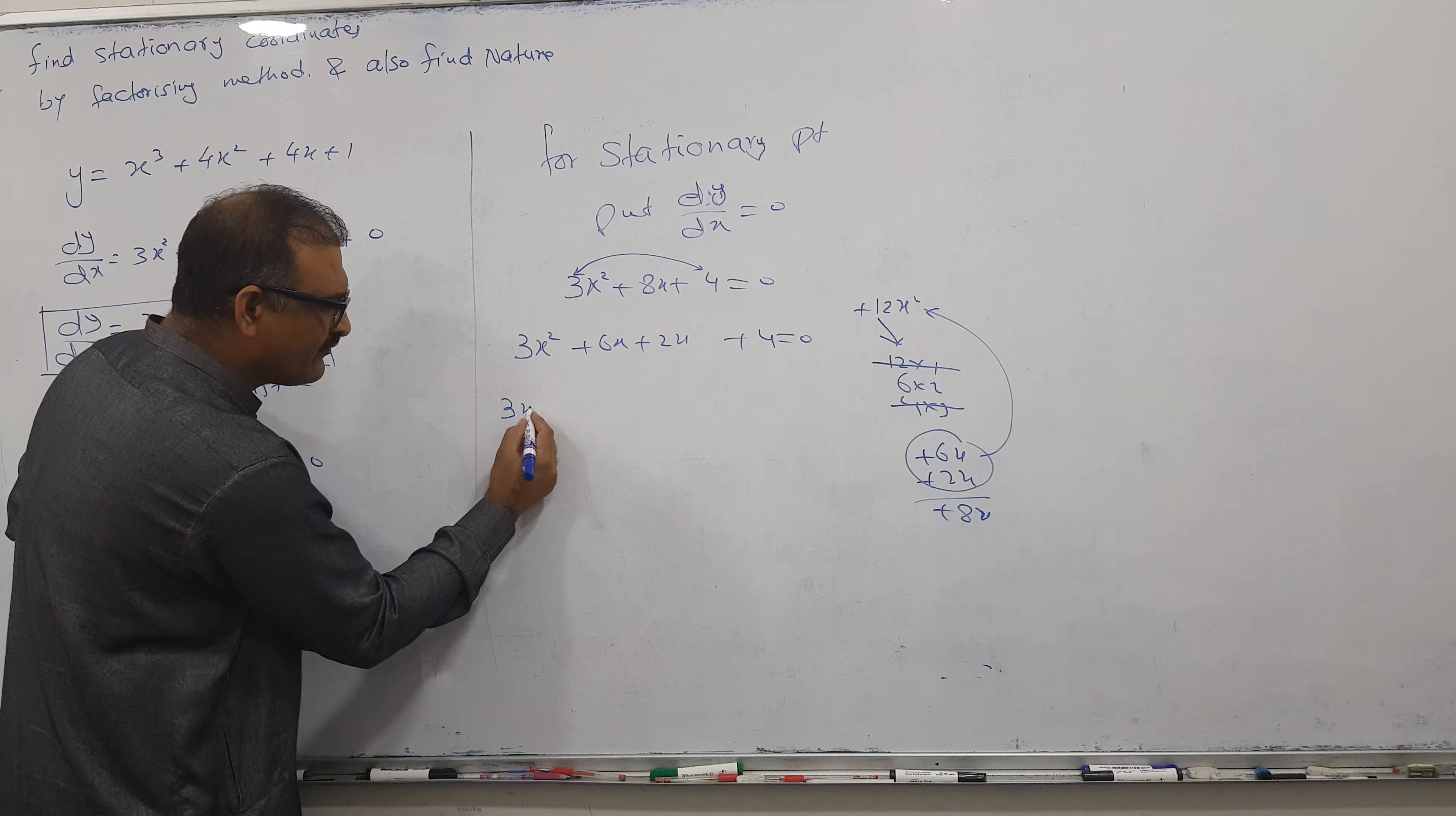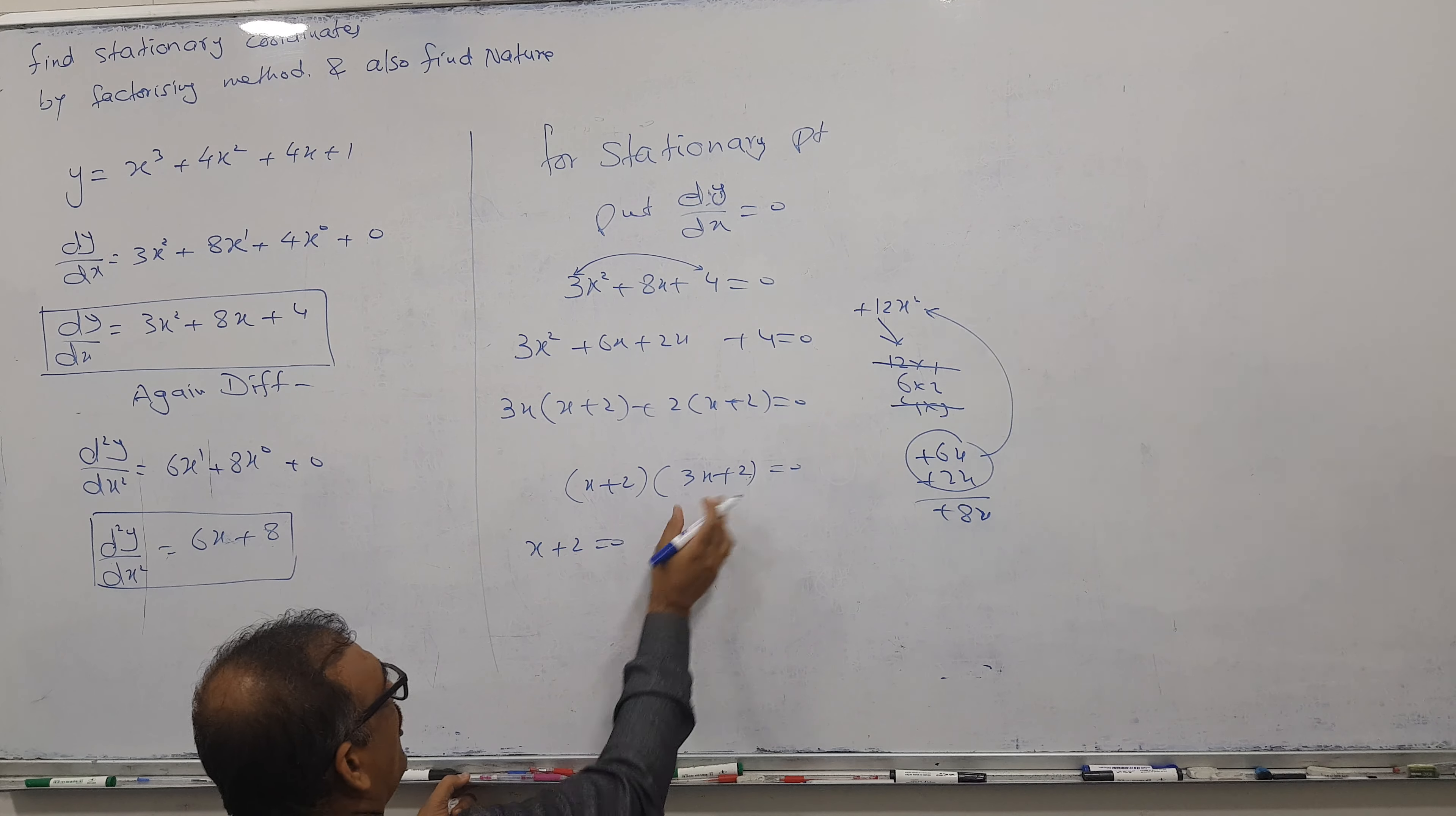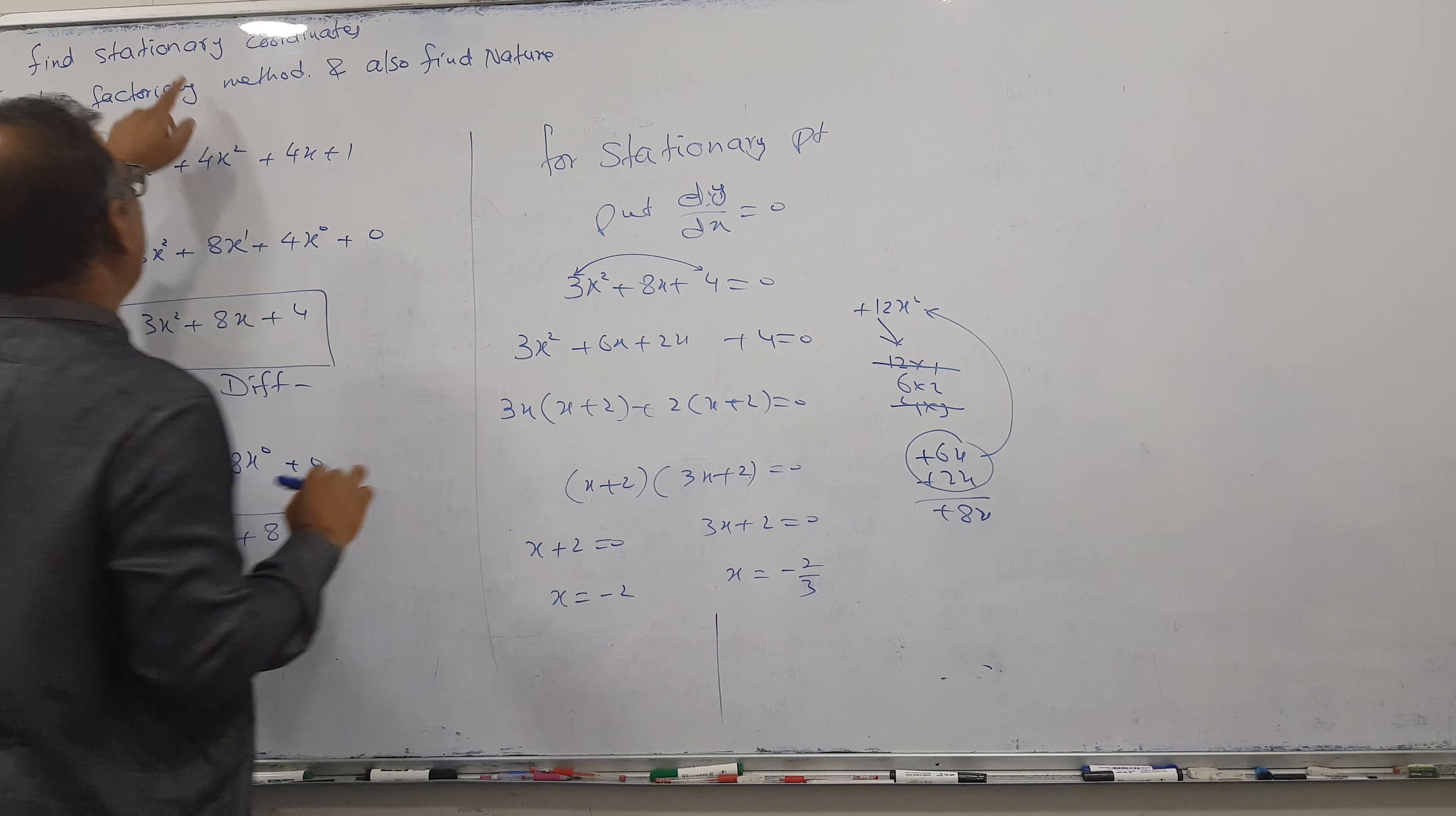3x common: I got x + 2. From here 2 common: I got x + 2. If this matches it means we are doing correct. This copy and this copy and this left behind. When product of two parts equals zero, either first part equals zero or second part equals zero. From here I got x = -2 and from here I'm getting x = -2/3. So I got two x values but I need coordinates.